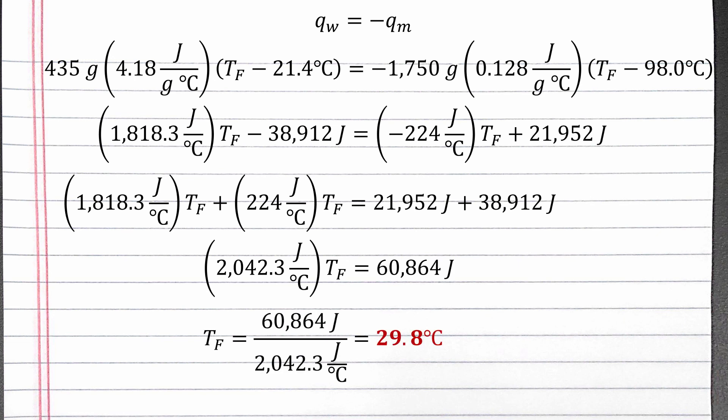And finally, we can divide both sides by 2042.3 joules per degree Celsius to get the final temperature of 29.8 degrees Celsius.